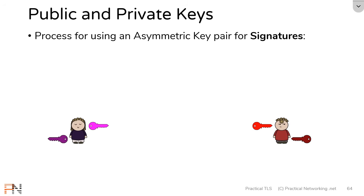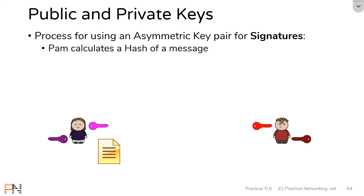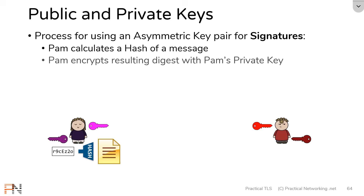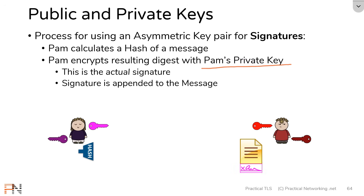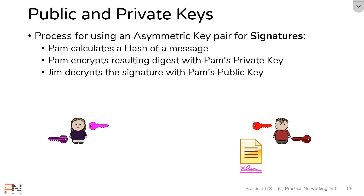Here is how asymmetric keys are used for generating signatures. Pam generates a message, then runs it through a hashing algorithm, resulting in a particular digest. That digest is then encrypted with Pam's private key. The result — the encrypted digest — is the signature of that message. The signature gets appended to the message, and both the message and the signature are sent across the wire. On the other side, Jim uses Pam's public key to verify the signature by decrypting it, which results in the digest that Pam created.